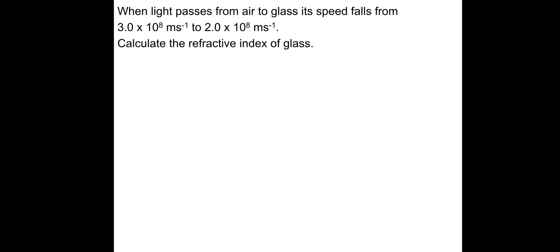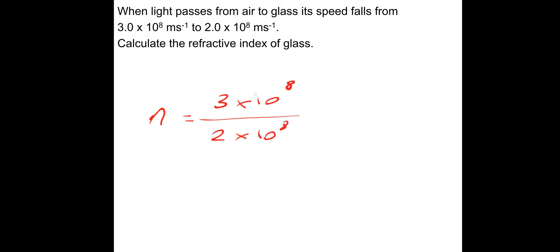Let's do this question — you may want to pause and have a go. When light passes from air to glass its speed falls from 3×10⁸ m/s to 2×10⁸ m/s; calculate the refractive index of the glass. So n equals 3×10⁸ divided by 2×10⁸ — the powers of ten cancel — leaving 3 over 2 which is 1.5. The refractive index of most glass is approximately 1.5 but it will differ slightly with a range of values depending on the type of glass.